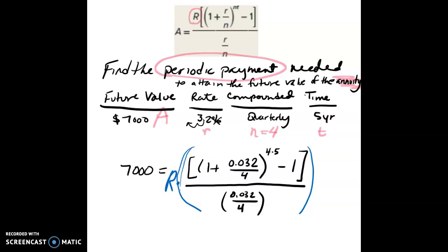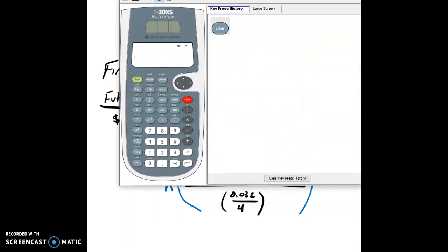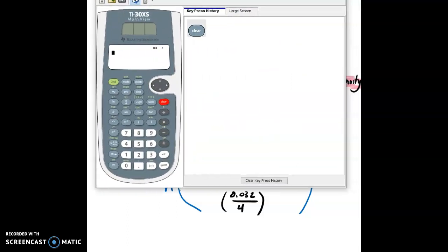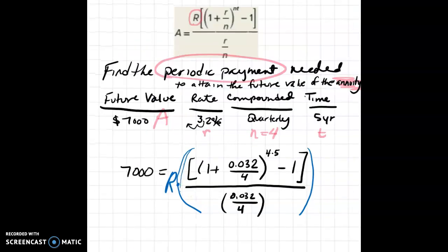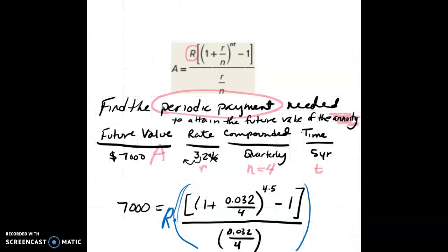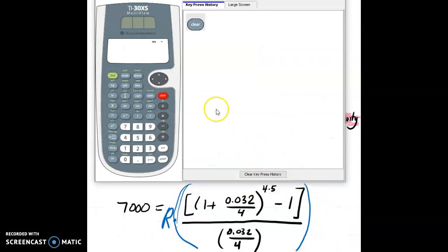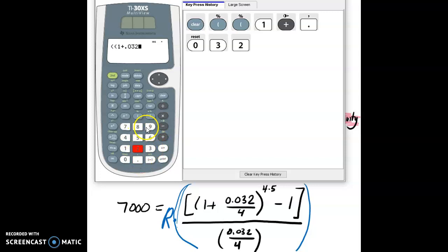So let's pull over my calculator. And so I'm going to take, let me see if I can pull this screen down a little bit so I can see what I'm putting in. I'm going to put two sets of parenthesis. So I'm going to put one plus 0.032, divided by four. Close the parenthesis.